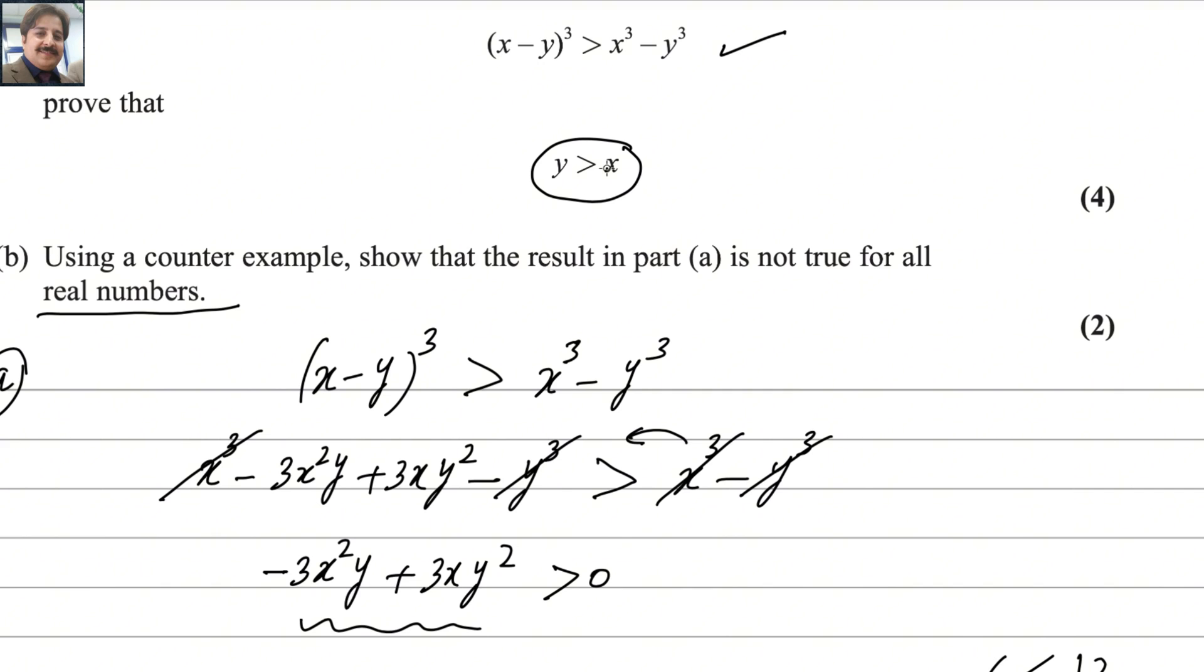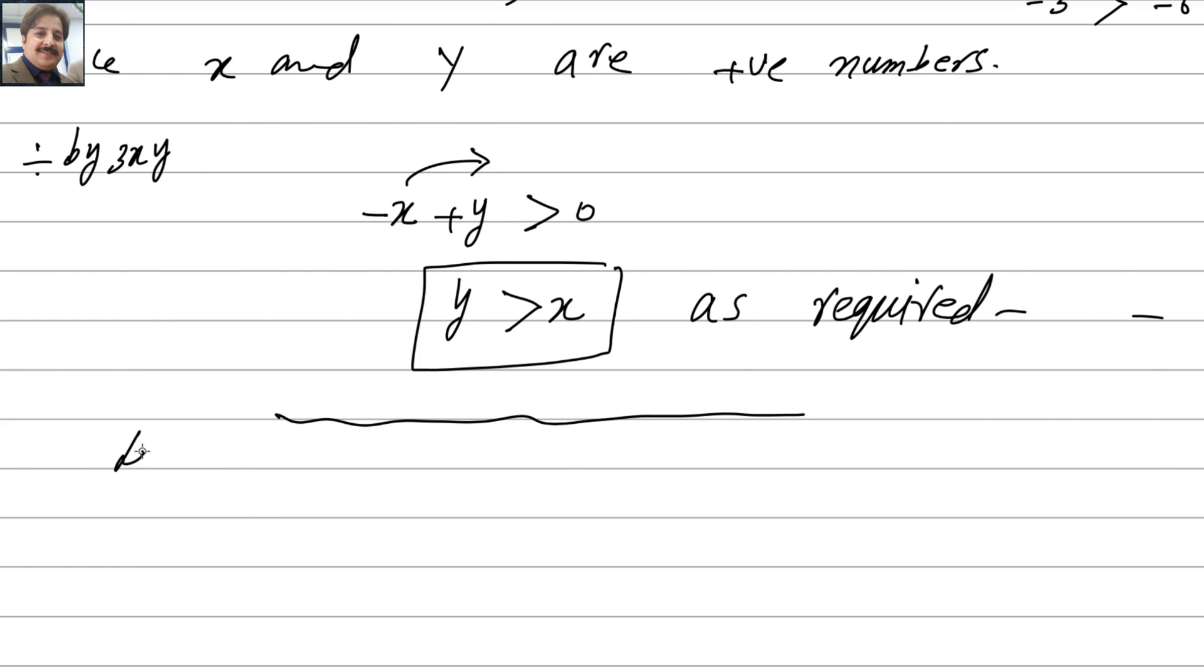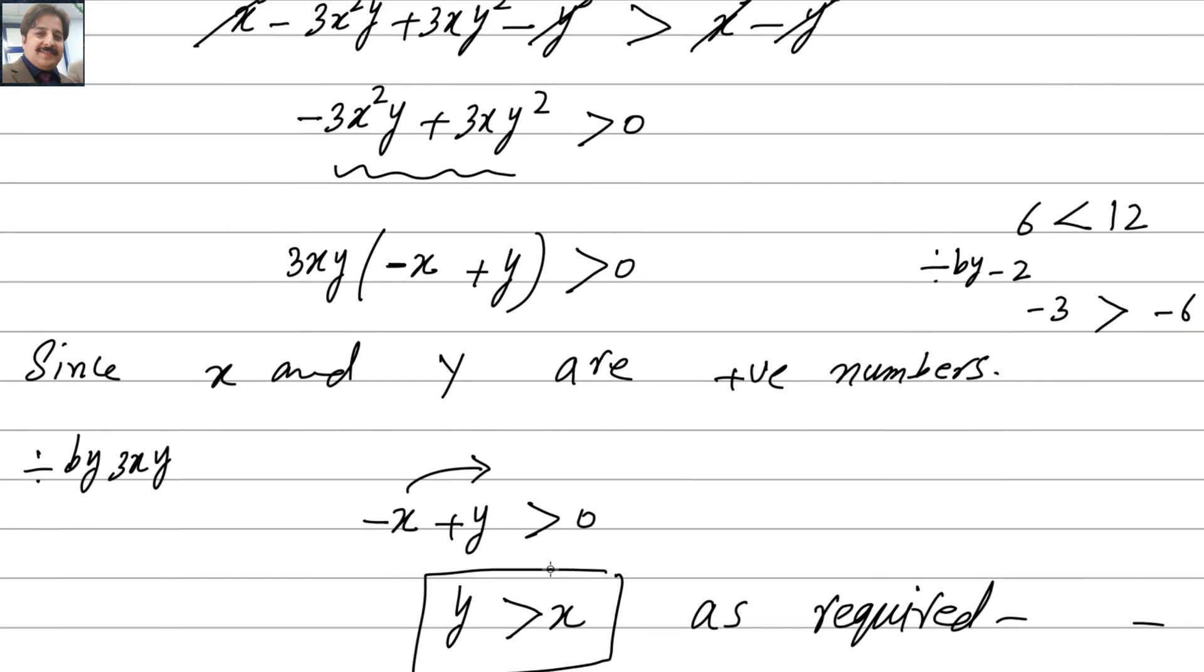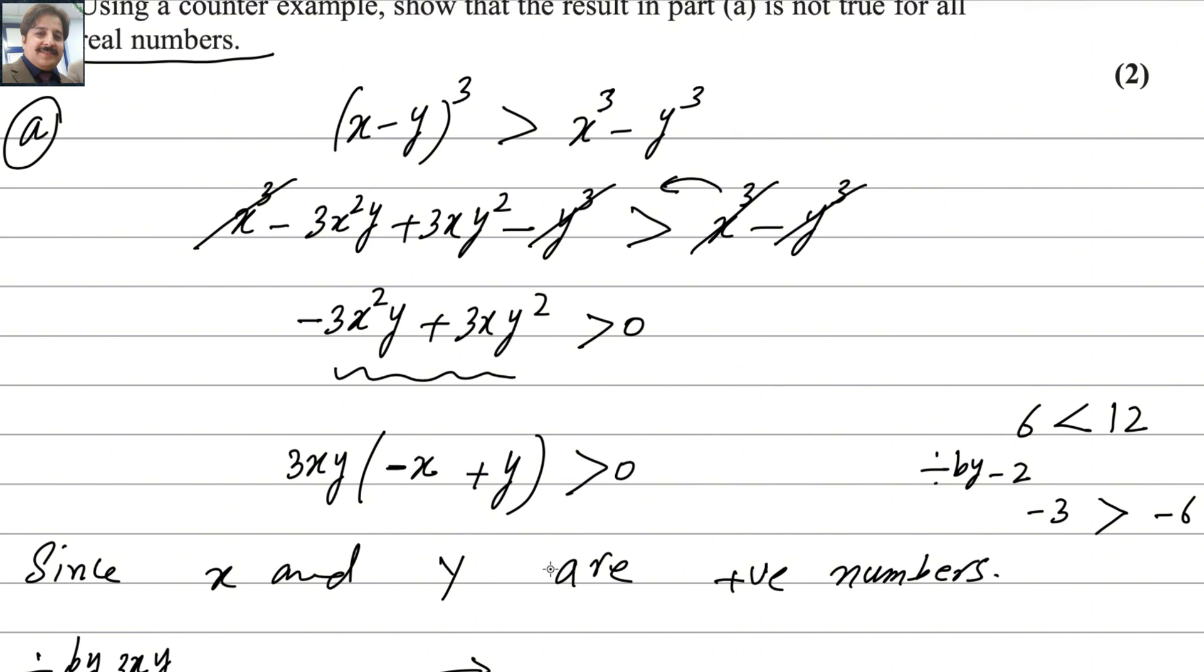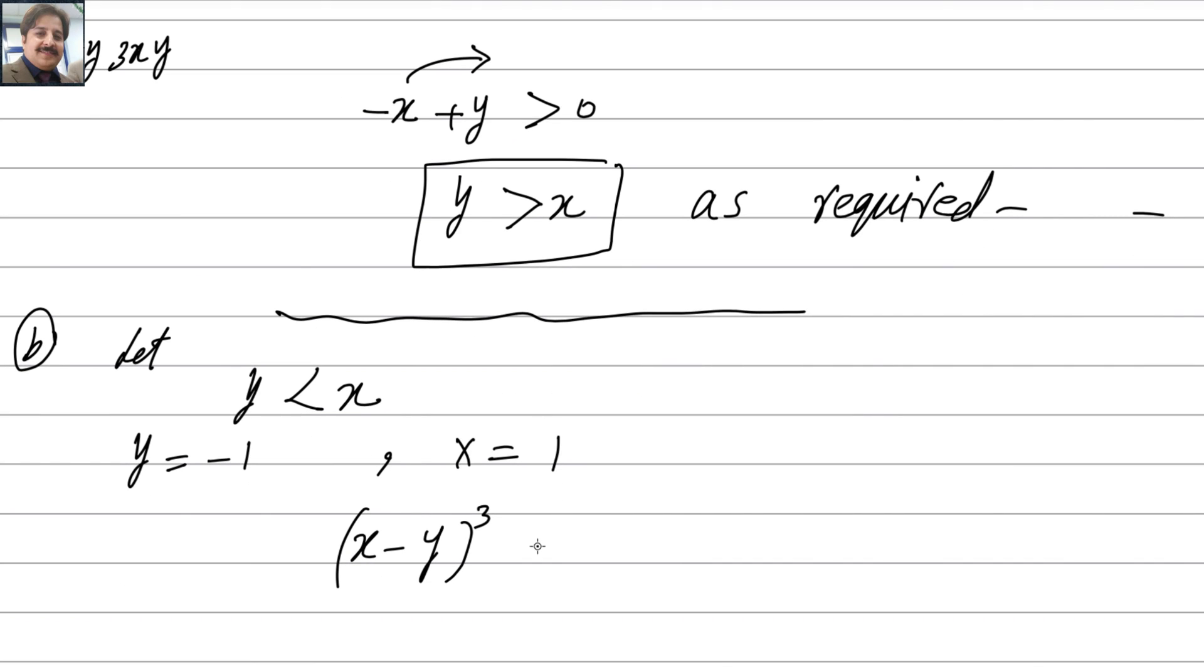A counter example could be where y is smaller than x. You can choose any numbers. If y is smaller than x, I choose y equals -1 and x equals positive 1. Now plug in these values into the inequality (x-y)³ greater than x³ - y³.